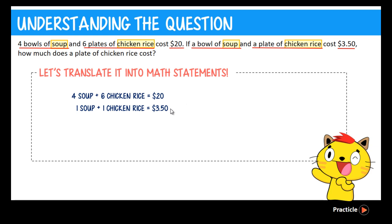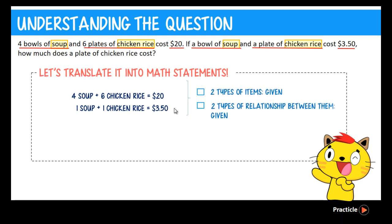It's very important to remember that we're comparing different combinations of soup and chicken rice to their prices. So whenever we see a question like this, where we are given two types of items and two types of relationship between them, we need to apply this method known as the elimination method to solve it. Don't worry if you have no idea how this works, because I'll walk you through it in a short while.